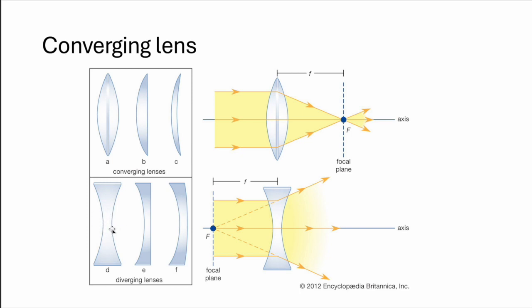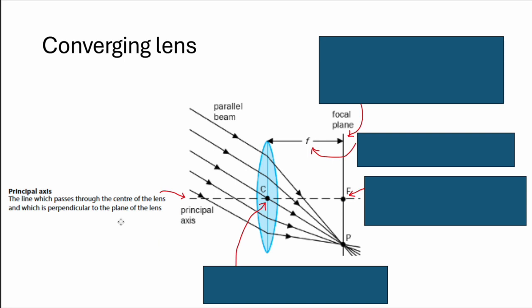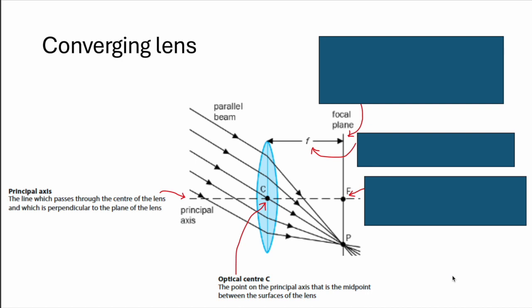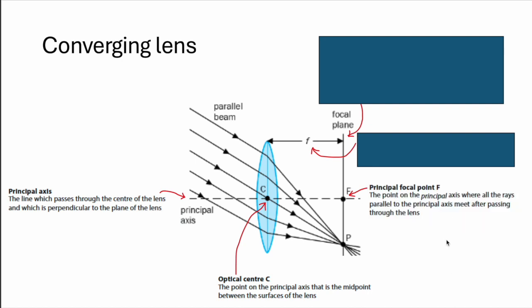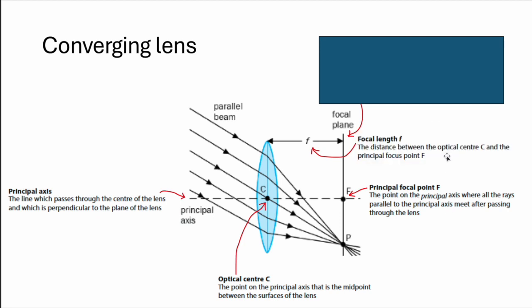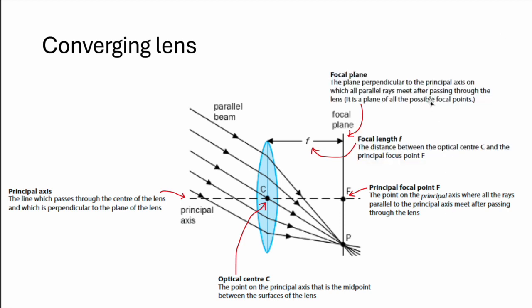And so with this topic, there'll be a lot of drawing involved and also some little vocabulary. So principal axis, of course, is just the line which passes through center of lens. Perpendicular, of course. Optical center will be the middle point of the lens. Principal focus point, point on principal axis, where all rays parallel to principal axis will meet after passing through the lens. Focal plane is perpendicular to the principal axis. So all parallel rays meet after passing through the lens. So focal plane is just a congregation or accumulation of all the possible outcomes of the different focal points. Focal length is just the distance between optical center and the focal point.